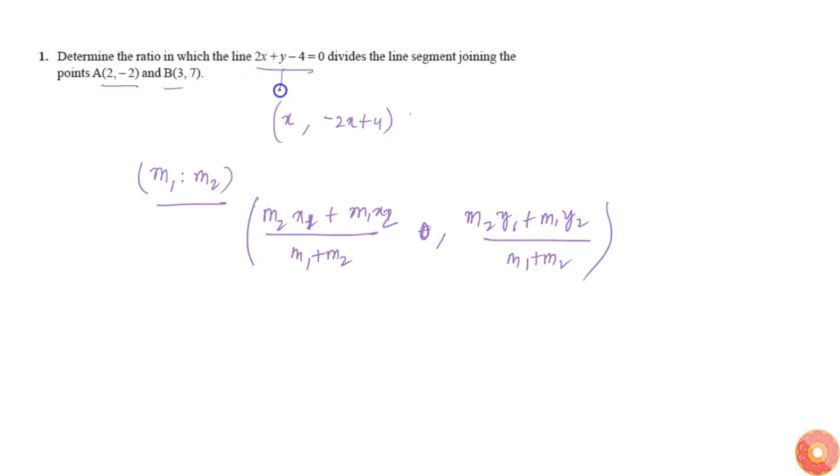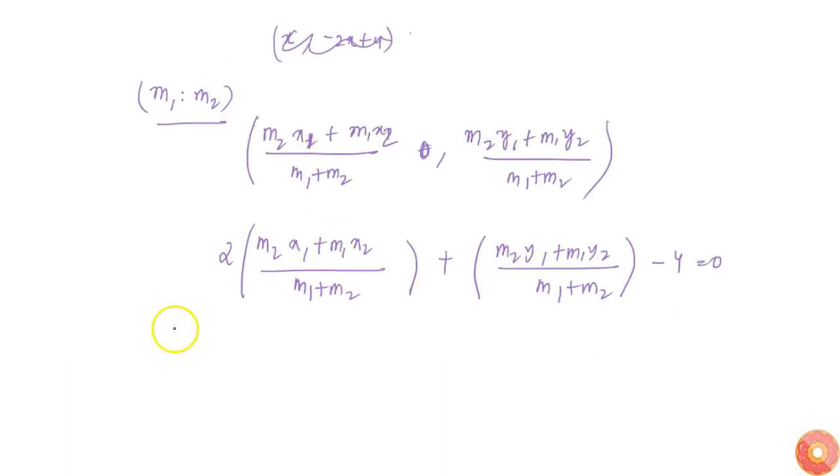Now we know that if this point is on this line, then it must satisfy this line equation. So instead of writing it in this form, I'll just get 2(m2·x1 + m1·x2)/(m1 + m2) + (m2·y1 + m1·y2)/(m1 + m2) - 4 = 0.